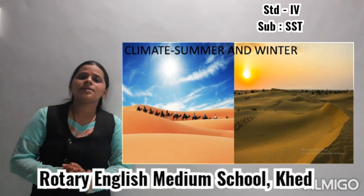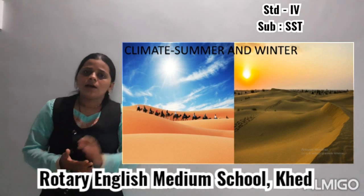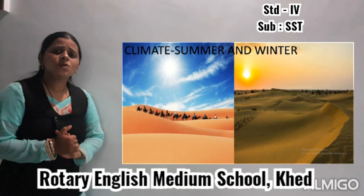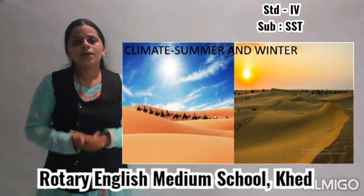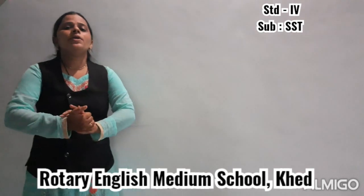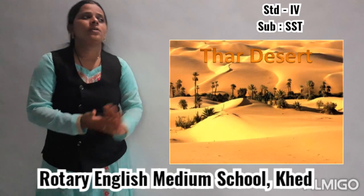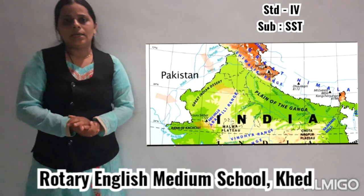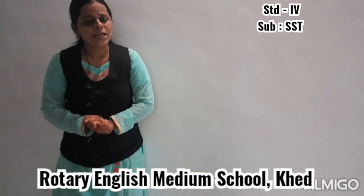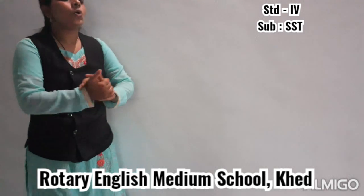Now why in the desert area are the nights very cold? Because the sand cools down very quickly. Because of that, the nights in summer and in winter remain very cold. Now today we are going to discuss about the Thar Desert, which is located in the northwestern part of India.